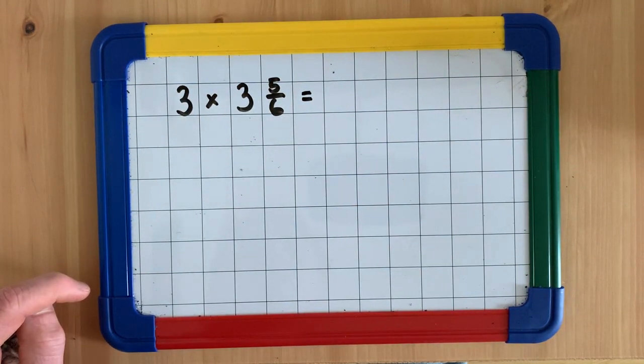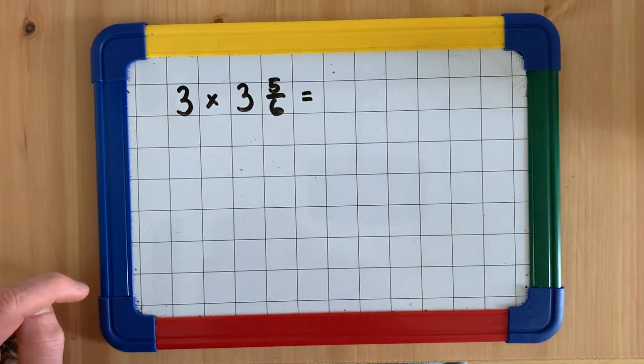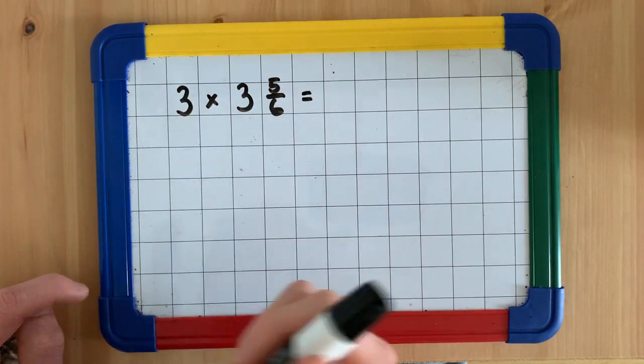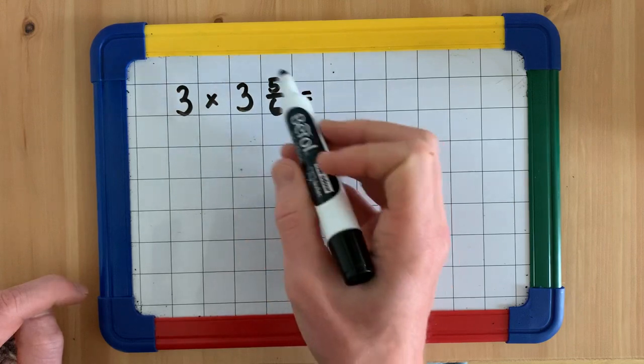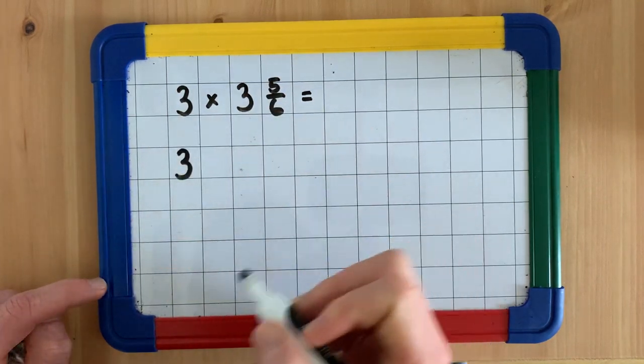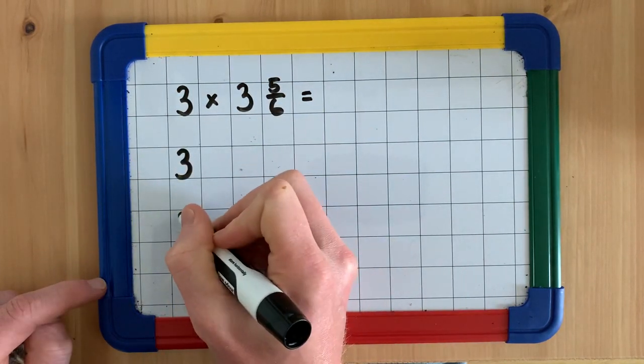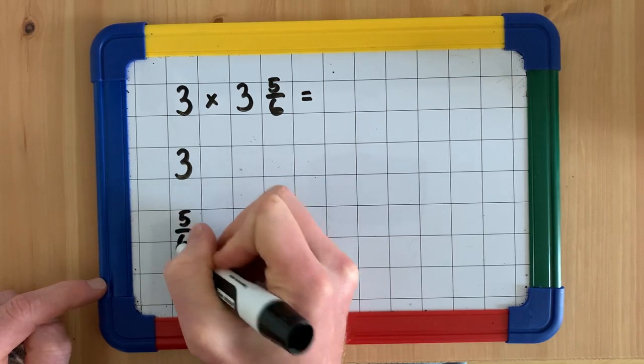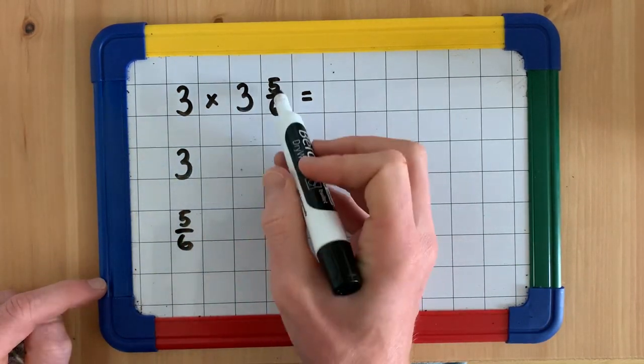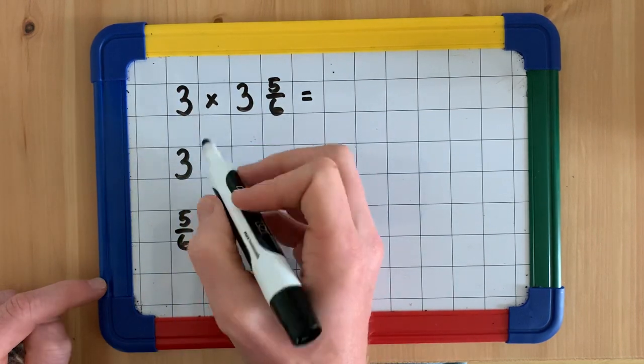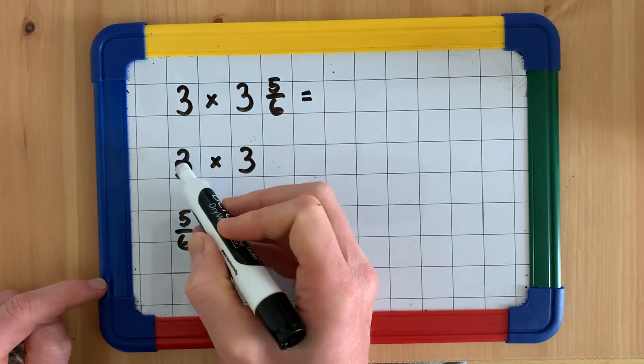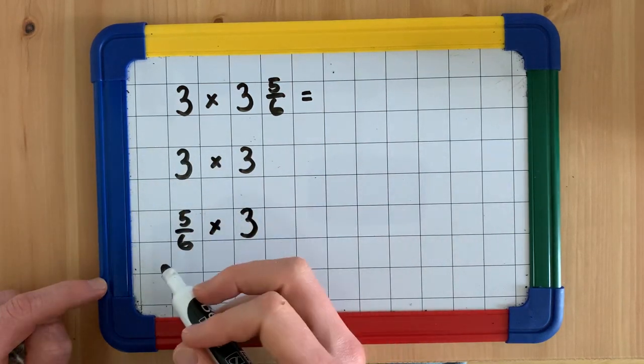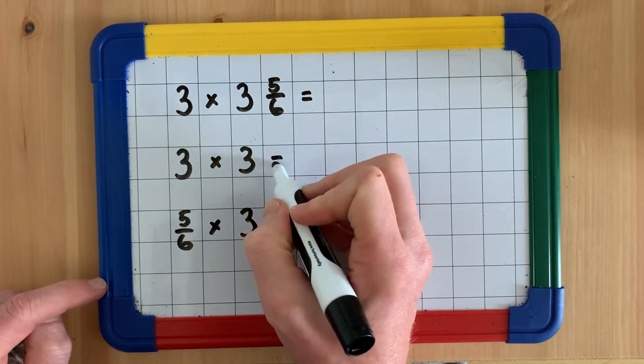The first method we're going to look at is solving this using a partitioning method. When we're solving an equation like this using partitioning, the first thing we do is partition our mixed number into its integer and its fraction, 3 and 5/6. Then you multiply the integer and the fraction by the number you are multiplying by.